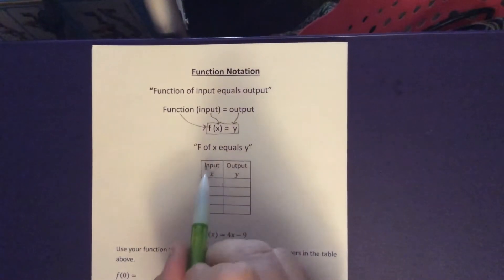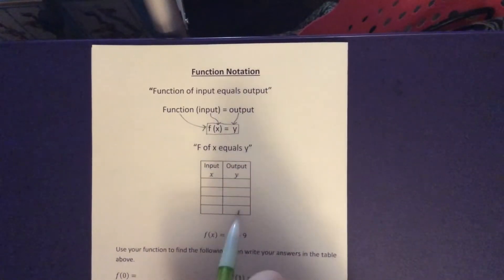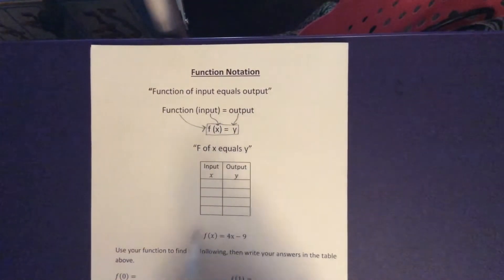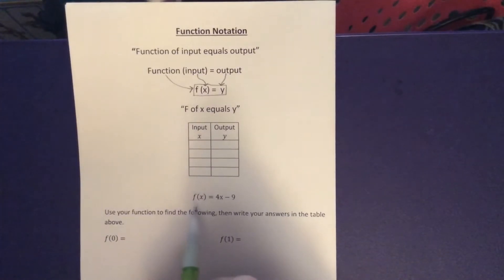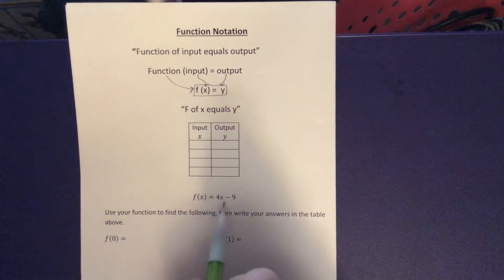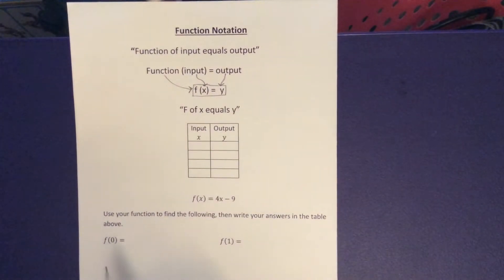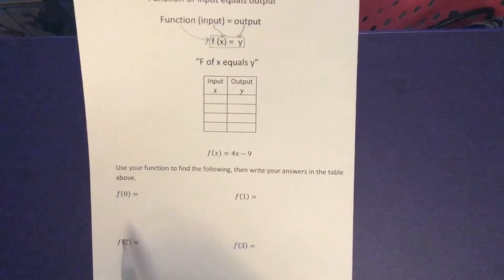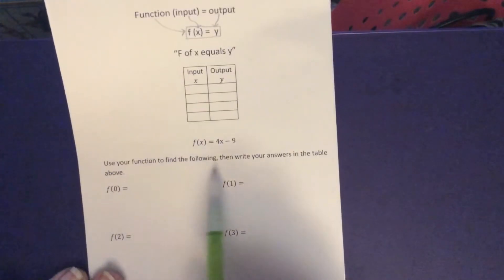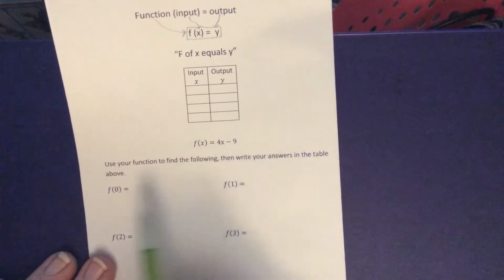So we're going to actually do that and we're going to create an input and an output table using this function that we have down here. So down here at the bottom of our page, or the middle of our page, we have f of x equals 4x minus 9. So this function we're going to use with different inputs that we're going to be given in order to create this input output table. So we're going to do that down here. Use your function to find the following then write your answers in the table above.